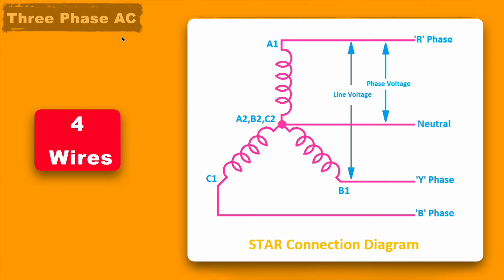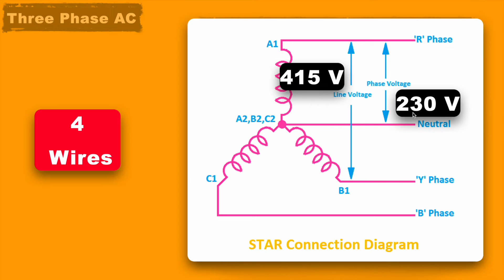Mainly 3 phase power supply has 2 configurations. The first one is called a star connection as you can see in this diagram. Here it has 3 phases: R phase, Y phase and B phase, and one common line neutral. The phase to phase voltage, which is called line voltage, is approximately 415V and the phase voltage with respect to the neutral is approximately 230V.